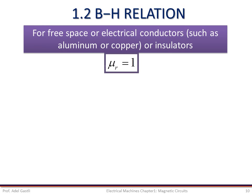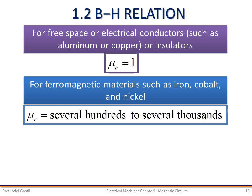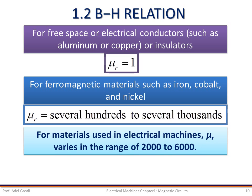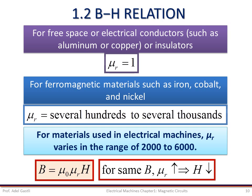For free space, electrical conductors such as aluminum or copper, or insulators, the value of mu_r is equal to unity. However, for ferromagnetic materials such as iron, cobalt, and nickel, mu_r varies from 700 to 7000. For most materials used in electrical machines, mu_r varies in the range of 2000 to 6000. A large value of mu_r implies that a small current can produce a large flux density in the machine — an important feature that improves efficiency, since for high relative permeability we can consume less current for the same desired performance.